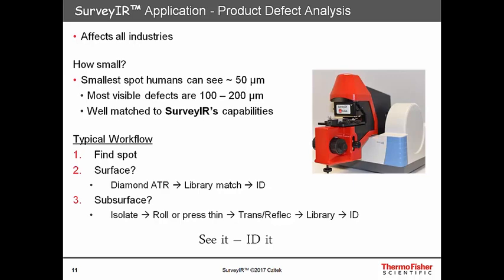We can analyze both types of samples with Surveyor, but the approach is slightly different. With a surface-located spot, it is best to attempt the analysis with our diamond ATR, which is surface selective. This minimizes sample preparation and provides an easier analysis. Once we've collected the spectra, we try to match them against libraries of known materials. If the sample is subsurface, we need to isolate it and remove it from the product, put it on an infrared transmitting or reflecting substrate, roll or press it thin, and then measure it by transmission through an infrared transmitting window or by double-pass reflection off a low-e glass slide.